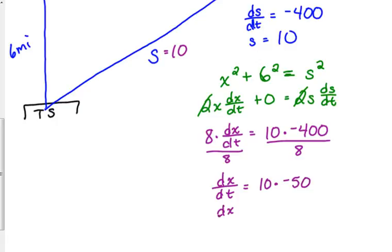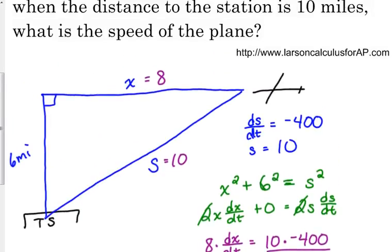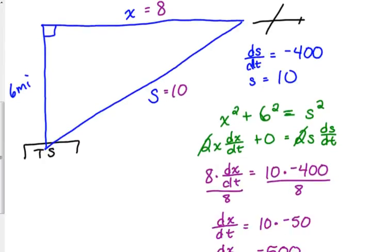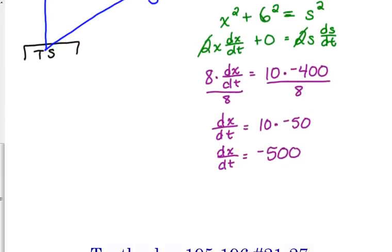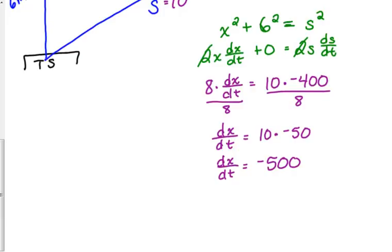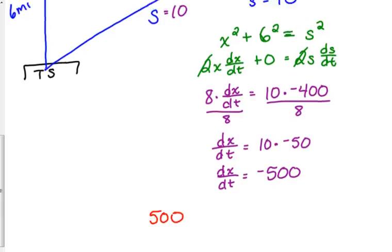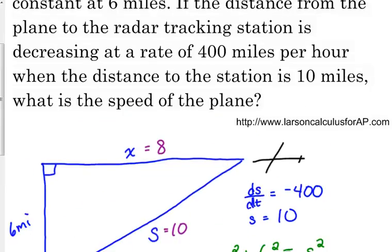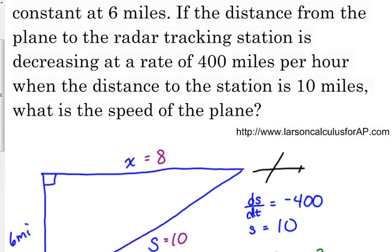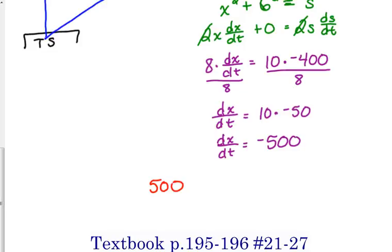So dx over dt is negative 500. But notice it asks for the speed of the plane. Speed does not account for direction. So that's the velocity of the plane. So the speed of this plane would be 500 miles per hour.